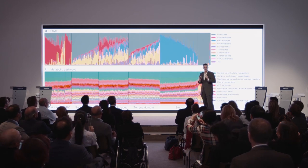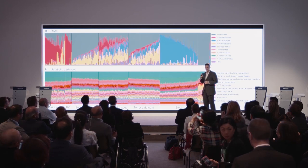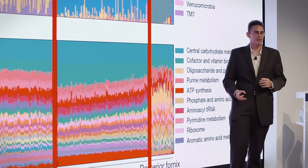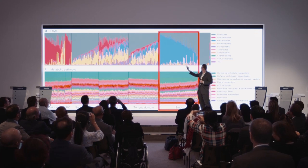What we found instead was this tremendous diversity. Each vertical line on this plot represents a different person. If we just focus in on the gut, these different colors represent different kinds of microbes. Even these healthy people had completely different kinds of microbes from one another.